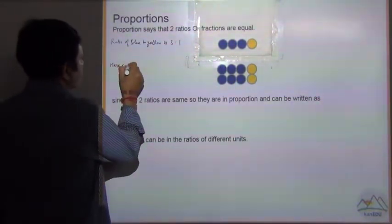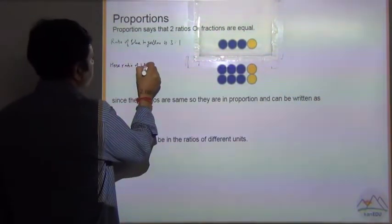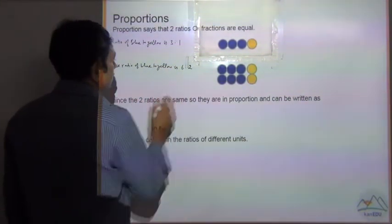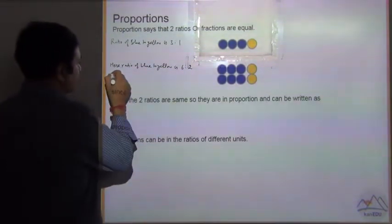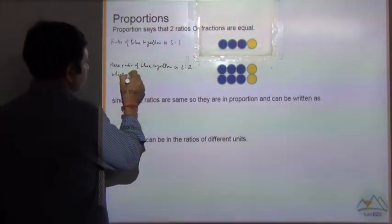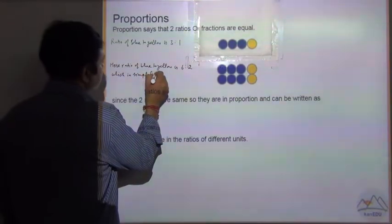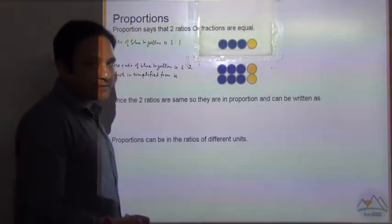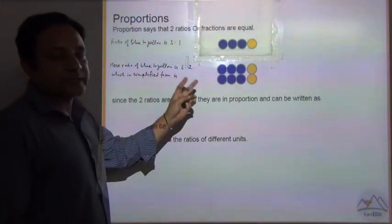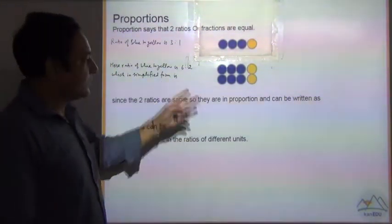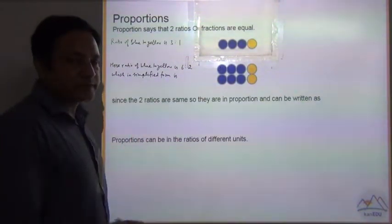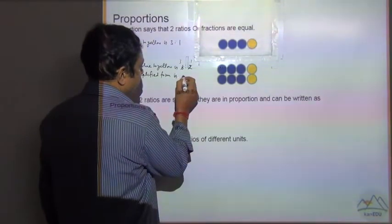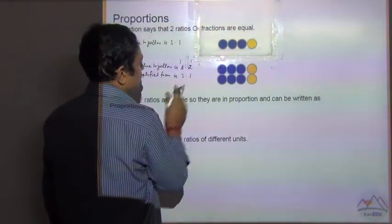Here, ratio of blue to yellow is 6 is to 2, which in simplified form - how to make it simplified? You can divide them with the same prime number. That prime number starts with 2. So 6 divided by 2 is 3, 2 divided by 2 is 1. In simplified form it is equal to 3 is to 1.